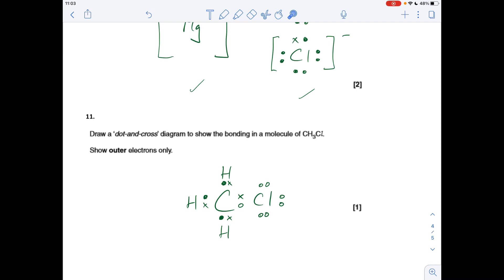And finally, number 11. Dot and cross diagram for CH3Cl. It's going to be covalent because everything's a non-metal. You'll notice I've gone for three styles of electrons, so the shaded circles I'm saying are for the hydrogens, the crosses are for the carbon, and the unshaded circles, those seven circles there, they're for the chlorine.